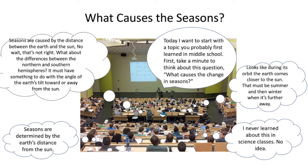And a fourth student remembers that there are seasonal differences between the northern and southern hemispheres and then remembers that the tilt of the earth on its axis toward or away from the Sun is involved in seasonal change.